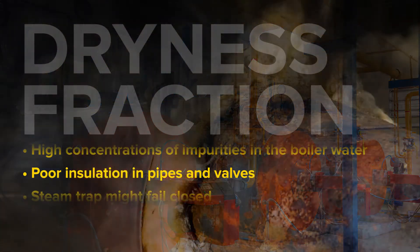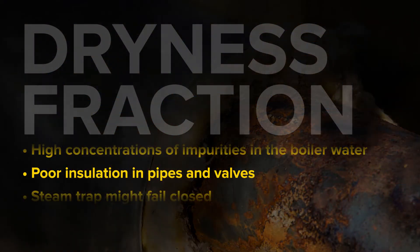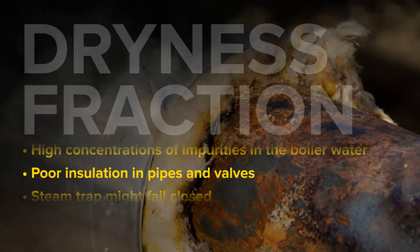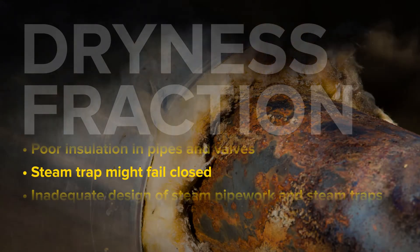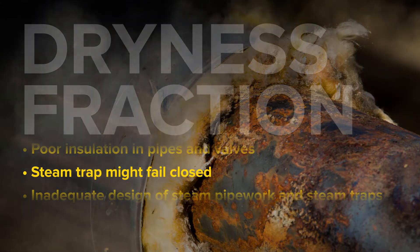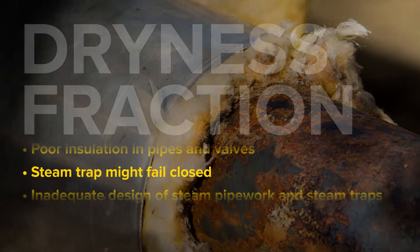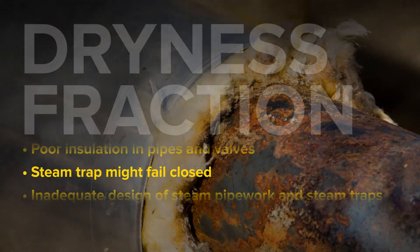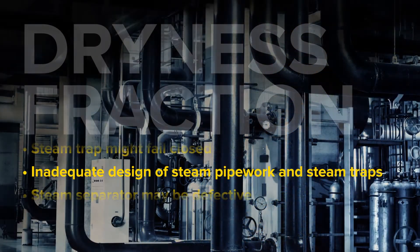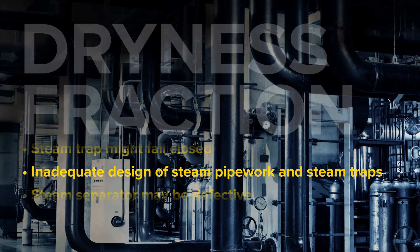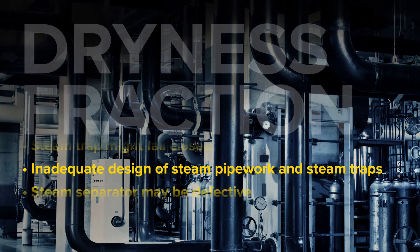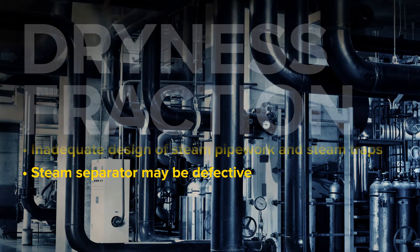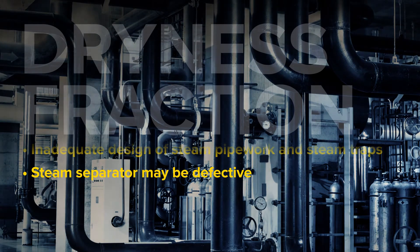Even poor insulation in pipes and valves leads to water in the steam as heat is lost and steam condenses. A steam trap might fail closed, particularly at the bottom of a separator, increasing the amount of condensate in the pipes. The design of steam pipework and steam traps may be inadequate to handle condensate, or a steam separator may be defective.